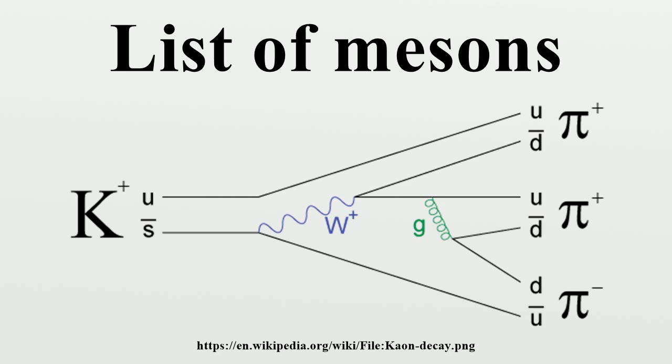The symbols encountered in these lists are I, J, P, C, G, U, D, S, C, B, Q, B, S, C, and B, as well as a wide array of subatomic particles.